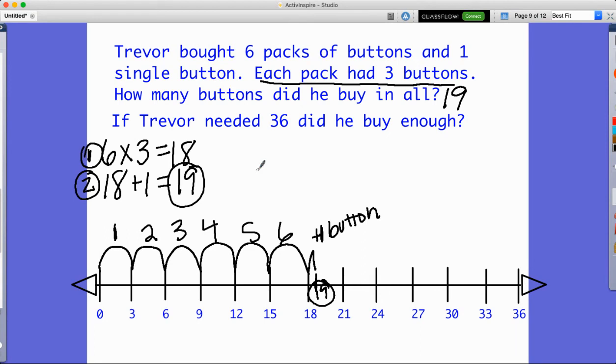Now it says, it wants you to extend that thinking. It says if Trevor needed 36, did he buy enough? Well, no, he didn't because we only have 19 here. So if he wanted to get all 36, if he needed to have 36 buttons, think about how many more would he need to have.